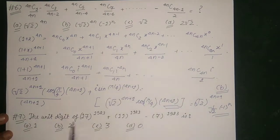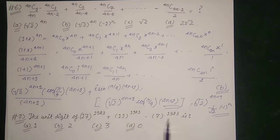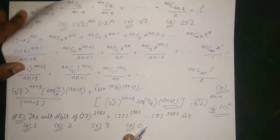Now let's look at the next question. The unit digit of 17 to the power 1983 plus 11 to the power 1983 minus 7 to the power 1983 can be given by: option A is 1, option B is 2, option C is 3, and option D is 0.